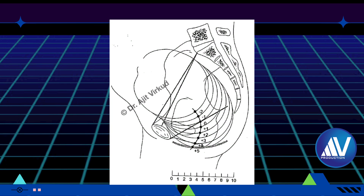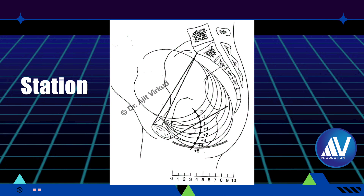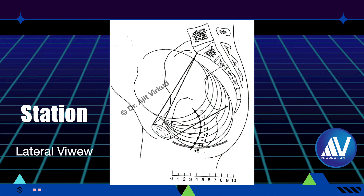Here a lateral view of station is shown to highlight the fact that the path of descent is a curved or J-shaped one, and not a straight line as it appeared in the previous animations, which were done entirely using Keynote software.